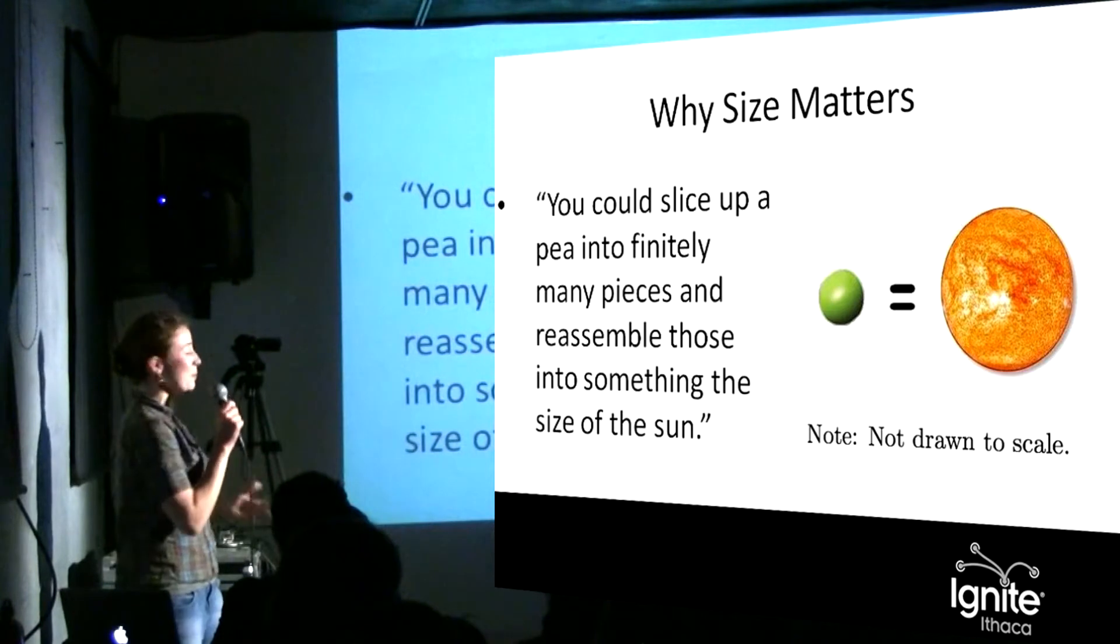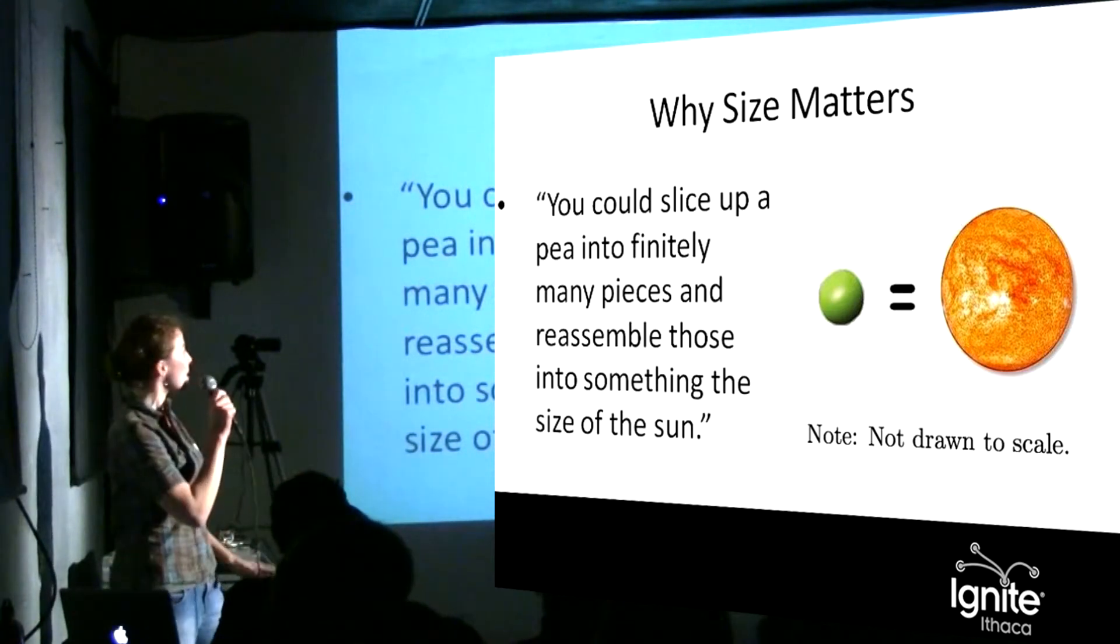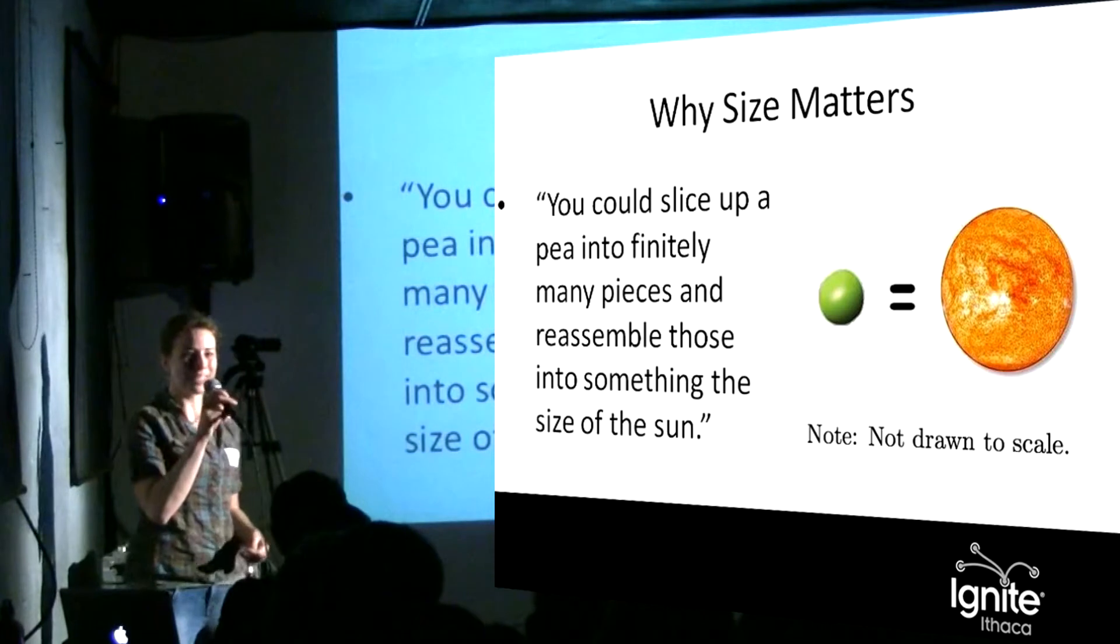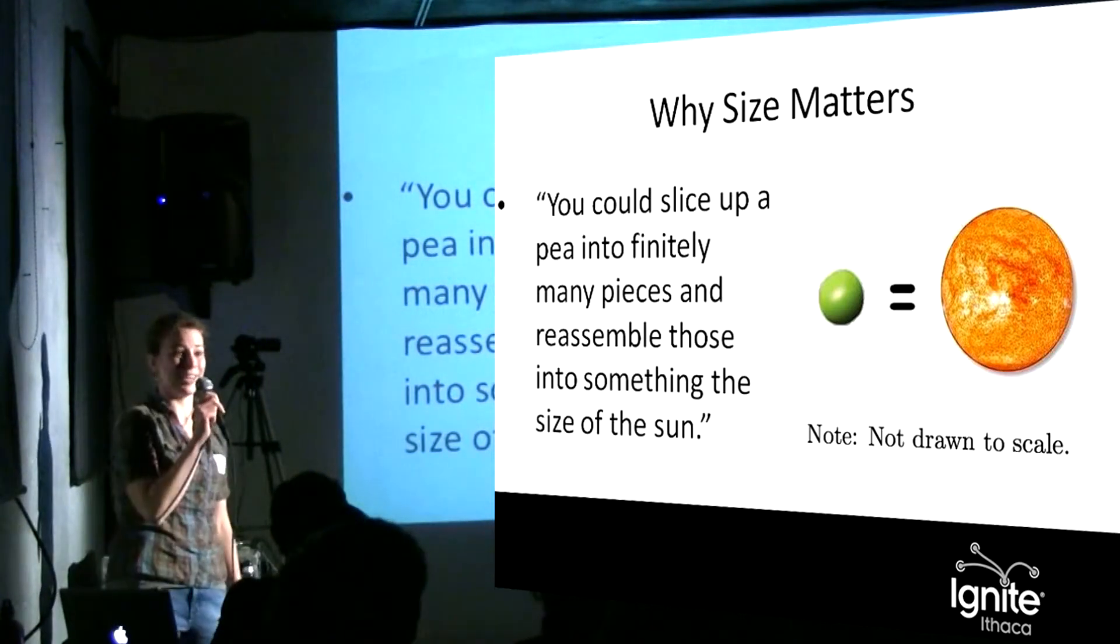To rephrase, a cool fact to tell people: if the axiom of choice was true, you could slice up a pea into finitely many pieces and reassemble it into something the size of the sun.